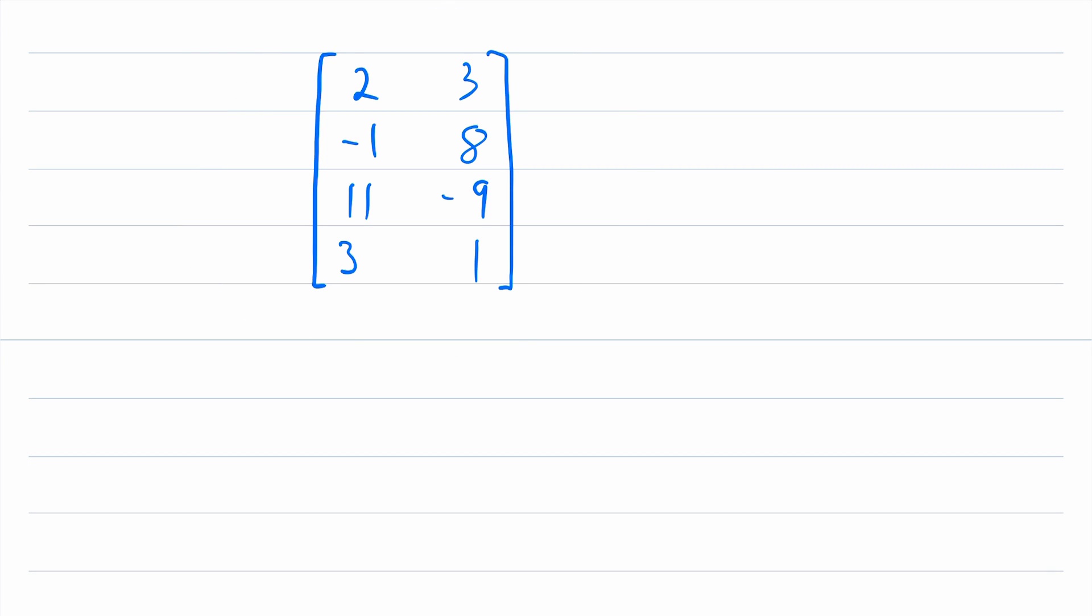And it's the same exact concept. The diagonal of this matrix is the collection of entries that are in the same numbered row and column. So that would be this two and eight.